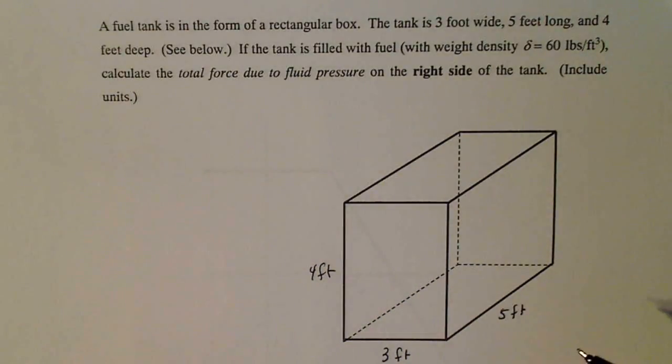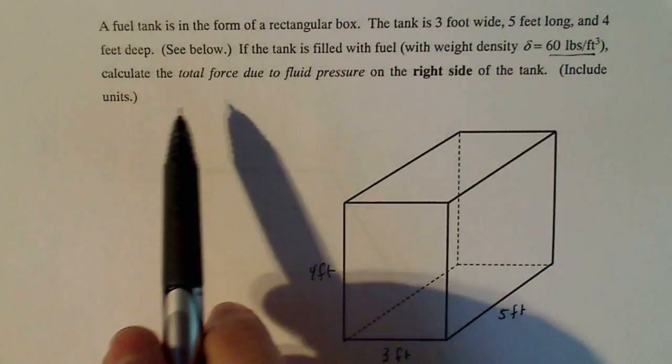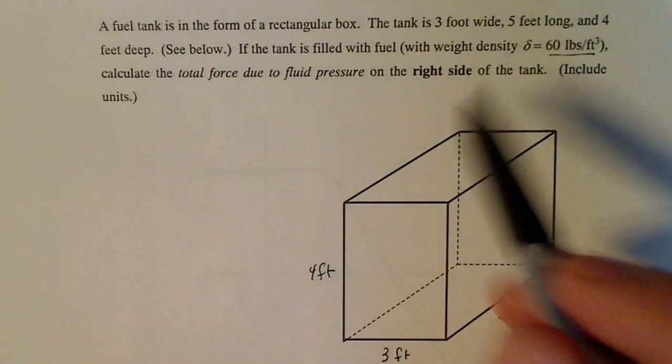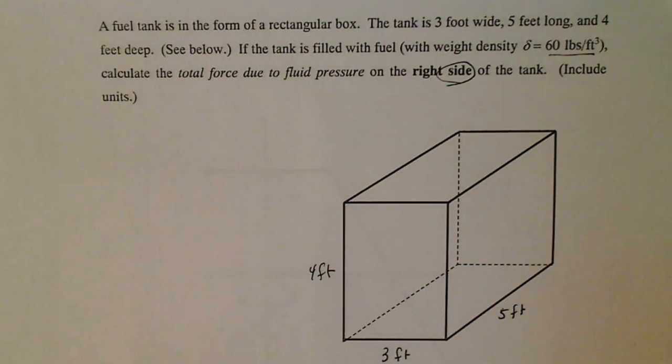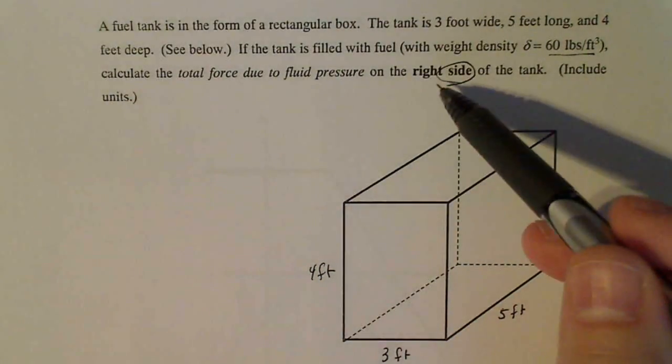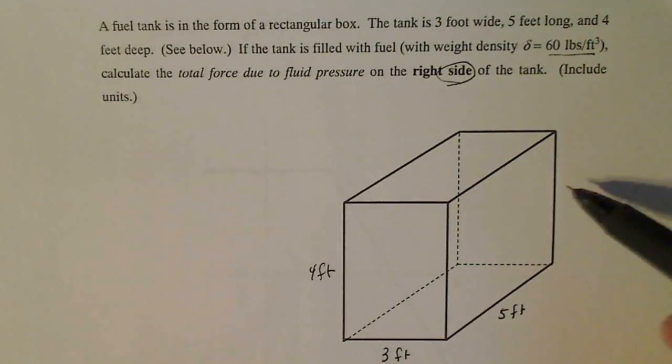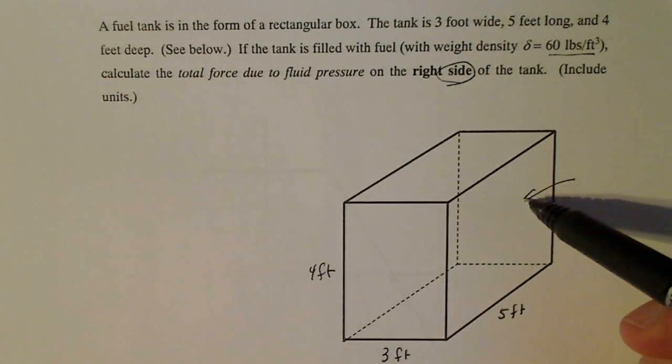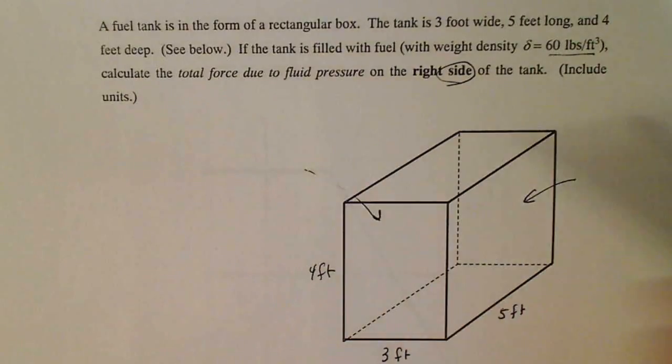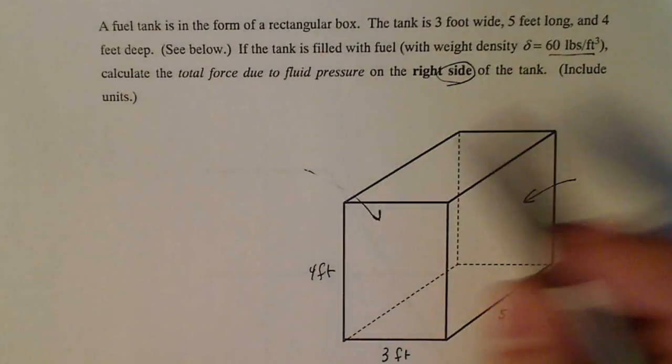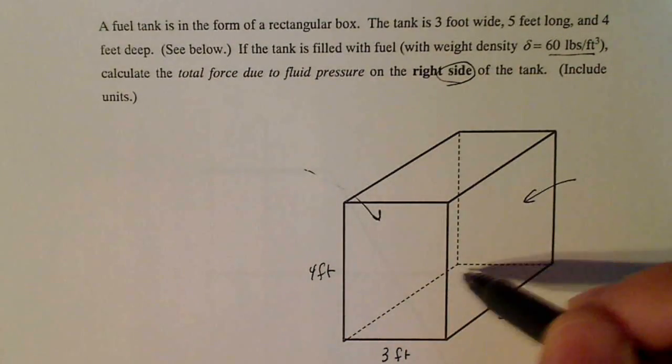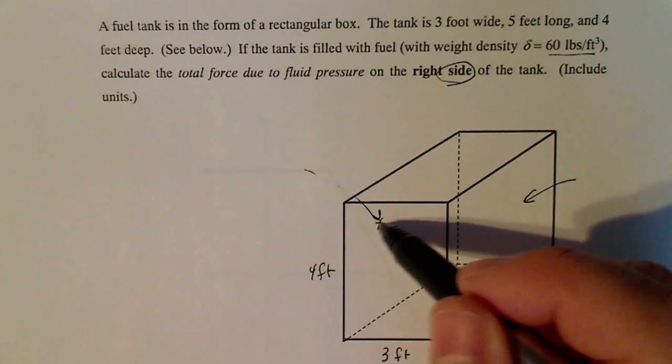That's how I interpret that. If the tank is filled with fuel weighing 60 pounds per cubic foot, calculate the total force due to fluid pressure on one side of the tank. Now it's on the right side. I'm assuming if I'm facing the box and I use my right hand, this is the right side right here, or this is the right side over here. Either way, it's the same shape. I'm pointing at the big side over here.